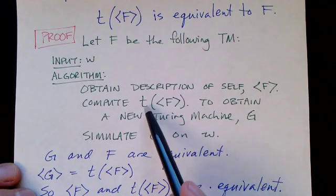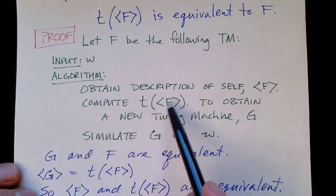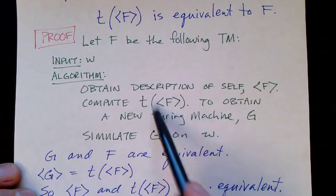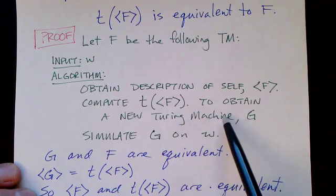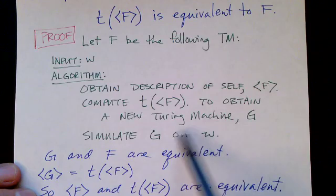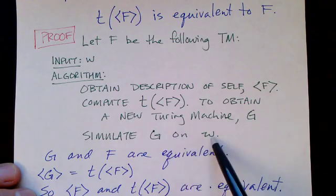Then it computes t, the computable function, on that description and gets a new Turing machine G. Then it simulates G on w.